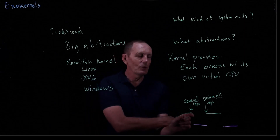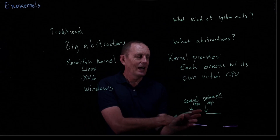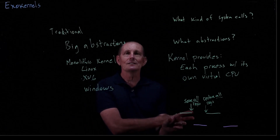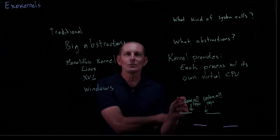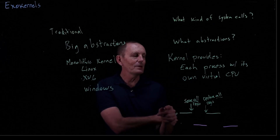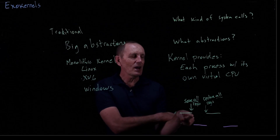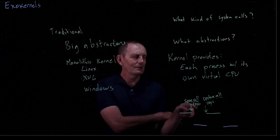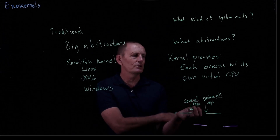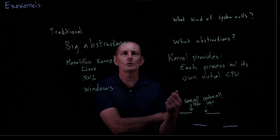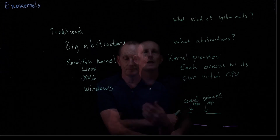The process doesn't have any way of saying it would really like larger quanta that happen less often, or that it needs a really short quantum. It also may be slow. If the process were involved, maybe it would know it's not even using floating point, so there's no need to bother saving and restoring the floating point registers, for example.